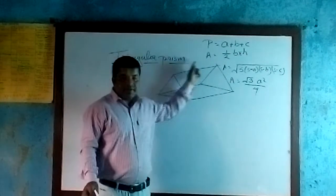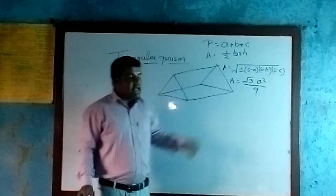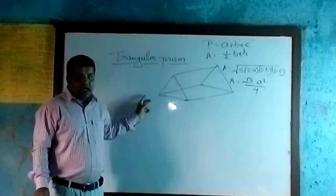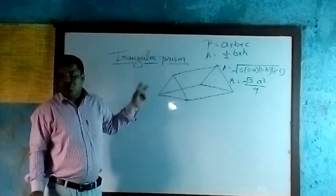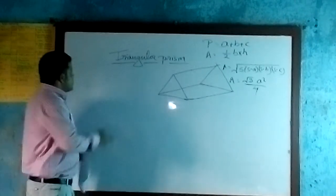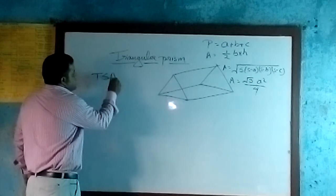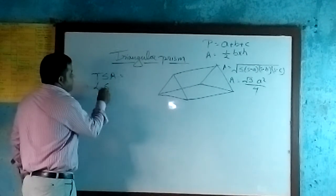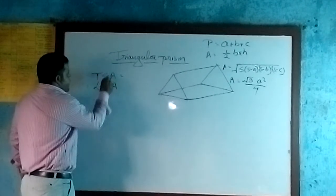This is a revision of what you read in class 8 and 9. Now let's learn about the total surface area, lateral surface area, and volume of the triangular prism.